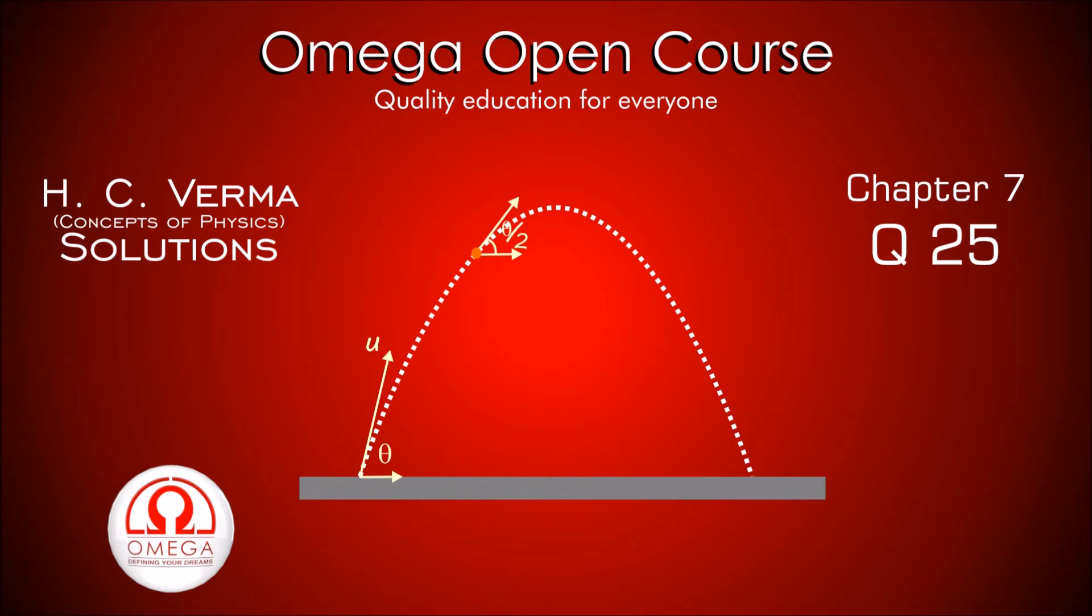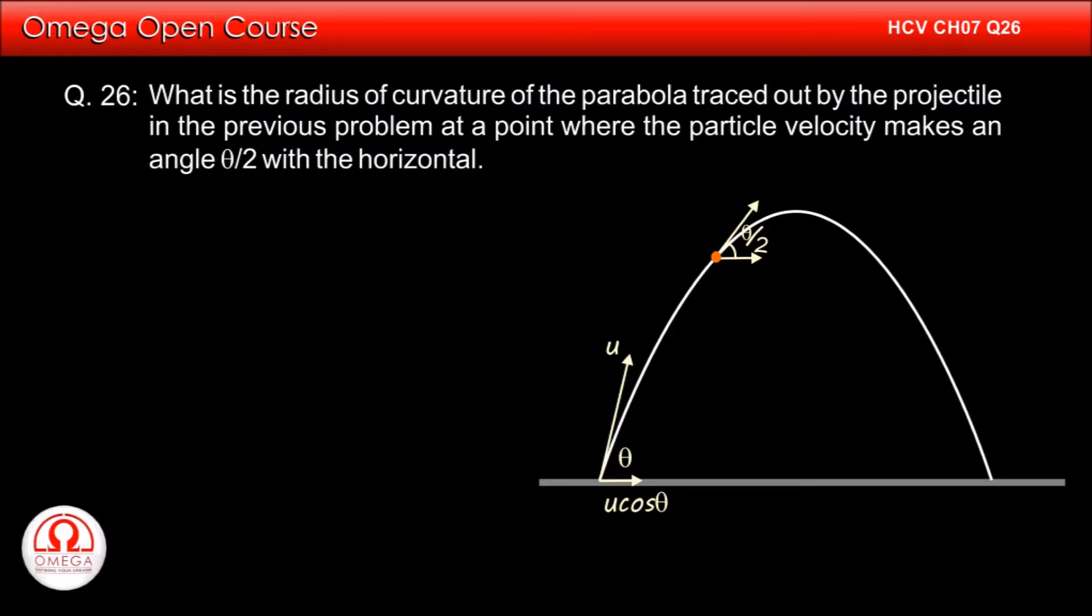What is the radius of curvature of the parabola traced out by the projectile in the previous problem at a point where the particle velocity makes an angle theta by 2 with the horizontal?